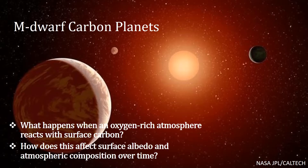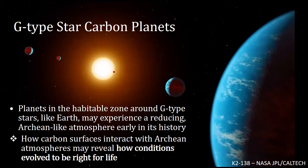How does this affect the surface albedo of a carbon planet and the atmospheric composition over time — the exchange between the atmosphere and the surface? There's another condition here too: carbon planets around G dwarf stars, which is closer to what we'd have at Earth. Planets in the habitable zone around this kind of star could experience more of a reducing Archean-like atmosphere, because that's what the Earth underwent early in its history — so that means oxygen-poor. How carbon surfaces interact with Archean atmospheres could reveal how conditions on such a surface might have evolved to be right for life.